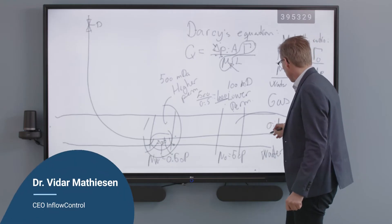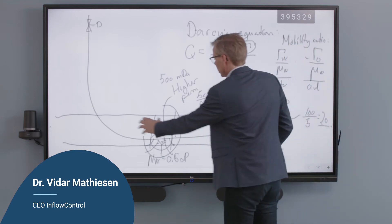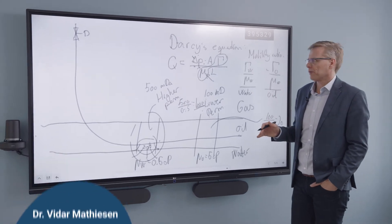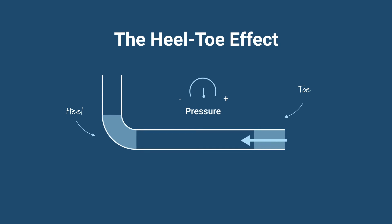If you have a long horizontal section — a long horizontal well like this — you will also always have the heel-toe effect. In horizontal wells, we call this end the toe and this end the heel. As fluids flow from the toe towards the heel on their way to the surface, a significant drop in pressure occurs inside the pipe along the horizontal section. This is what we call the heel-to-toe effect.